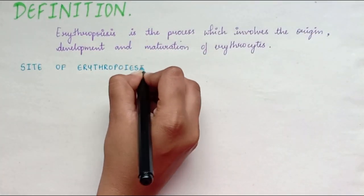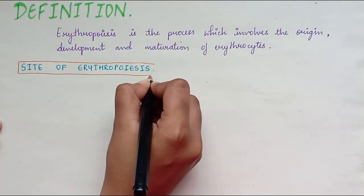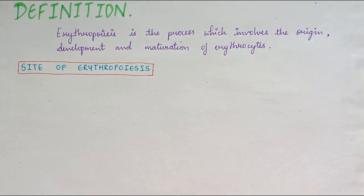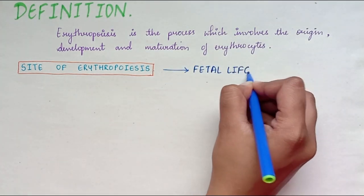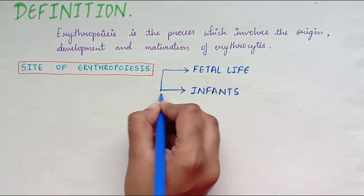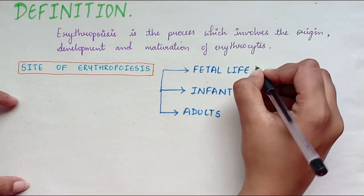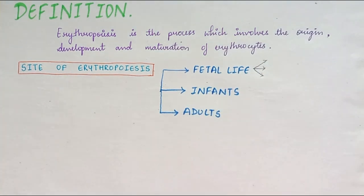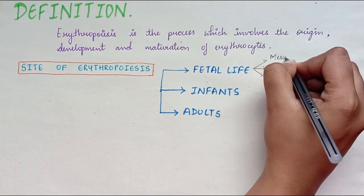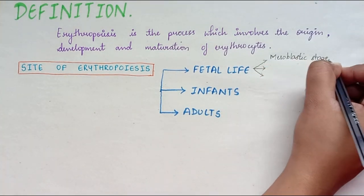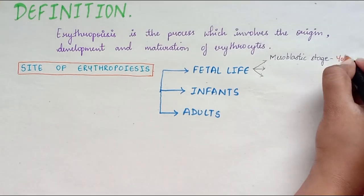Site of Erythropoiesis. The site of erythropoiesis is different in fetal life, in infants and in adults. In fetal life, the erythropoiesis occurs in three stages.